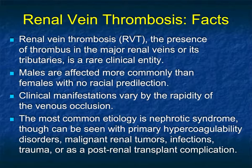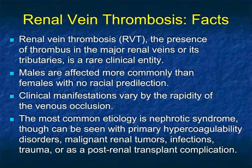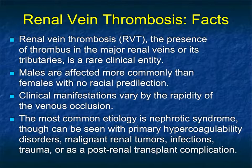Let's pick it up away from the artery and go to the vein. Renal vein thrombosis, or the presence of thrombus in the major renal veins or its tributaries, is far less common than one would expect. It's more common in men than women, and the clinical manifestations will vary by the rapid nature or lack thereof of the venous occlusion. The most common etiology is typically nephrotic syndrome, though almost any hypercoagulable disorder can cause it.